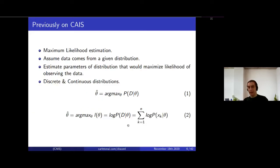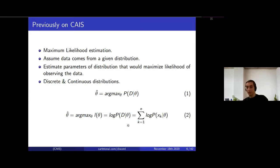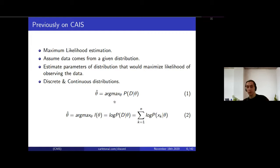Before we start, I'd like to remind everyone that in the previous talk we discussed maximum likelihood estimation. Basically, if we have data and assume it follows some given distribution, we can estimate the parameters that maximize the likelihood of observing that data. We did that for discrete and continuous distributions. The goal is shown in equation one: find parameter theta that maximizes the probability of observing data D given those parameters, by assuming data is IID, taking the log likelihood, and taking derivatives equated to zero.